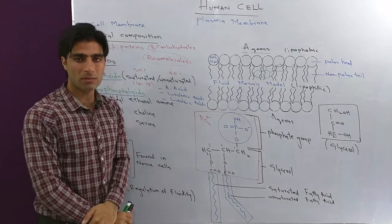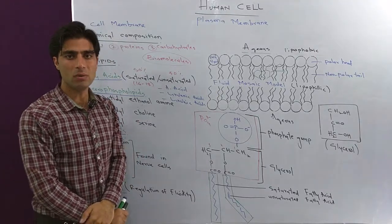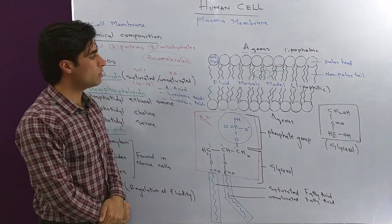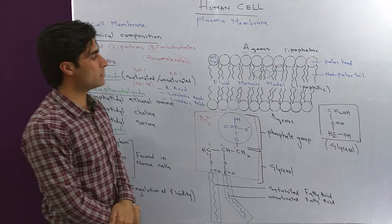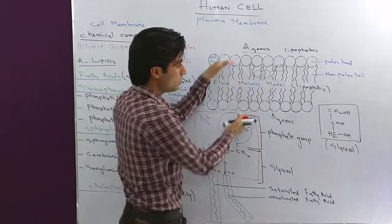The fourth lipid type is cholesterol. Cholesterol molecules are embedded in the lipophilic environment of the fluid mosaic model. These cholesterol molecules regulate the fluidity of the plasma membrane. So among the chemical composition of plasma membrane, lipids are of four types: fatty acids, glycerophospholipids, sphingolipids, and cholesterol.